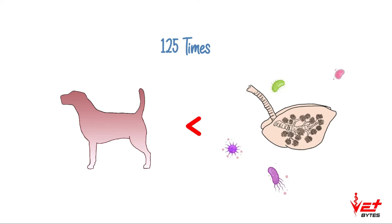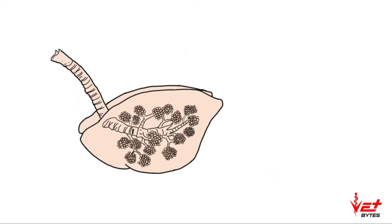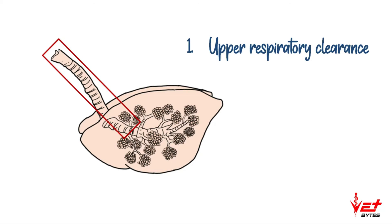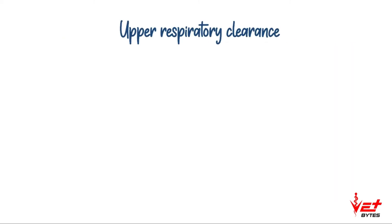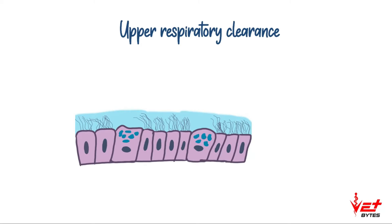The removal of particles that have been inhaled into the lungs is called respiratory clearance. Respiratory clearance is of two types. The clearance of substances in the respiratory tract up to the bronchioles is called upper respiratory clearance, and the removal of foreign particles in the alveoli is called alveolar clearance.